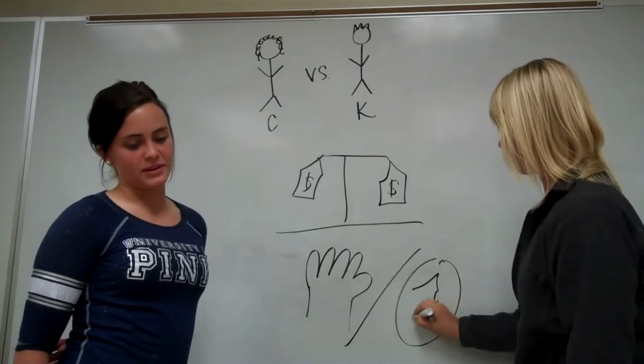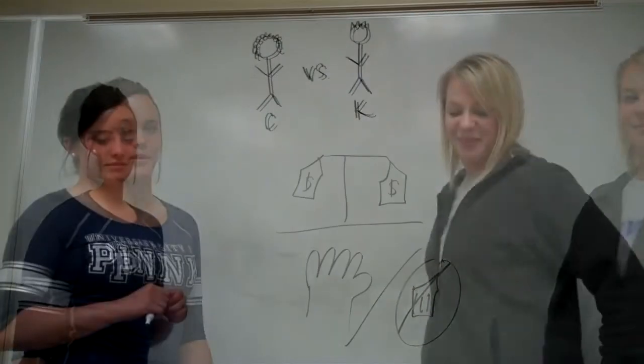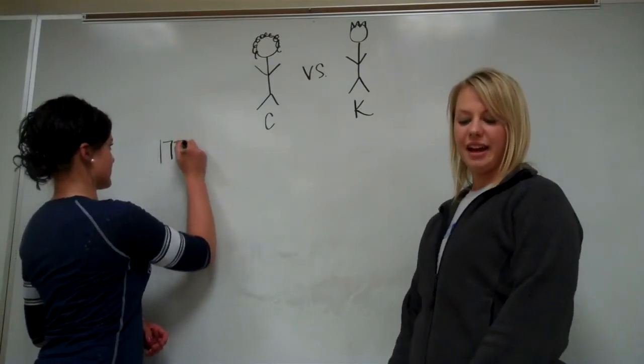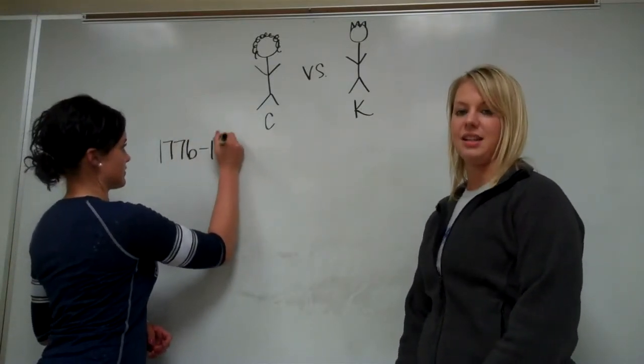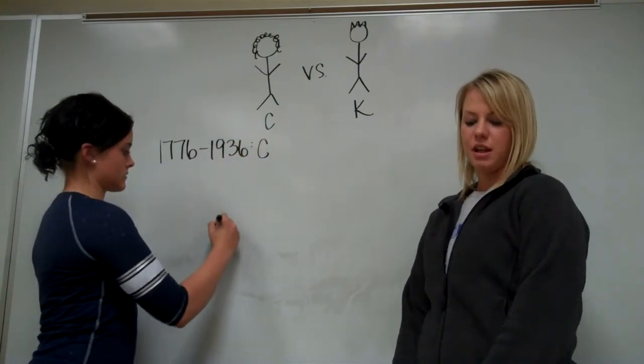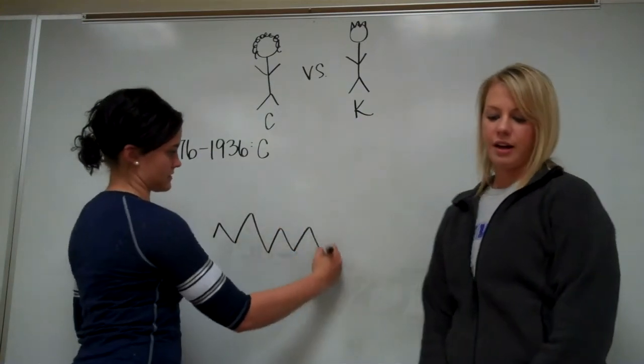With the invisible hand, prices fluctuate because of the actions in the market. From 1776 to 1936, a classical era defined the United States economy. Classical economists argue that price fluctuations in a long-term economy are expected.